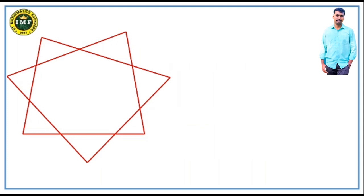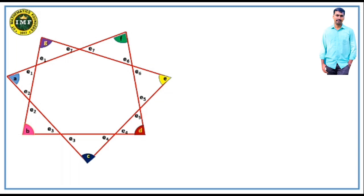Here is the second complex figure. I mark the angles at the vertices as A, B, C, D, E, F, G. I want the sum A + B + C + D + E + F + G. Again, the exterior angles are denoted E1, E2, E3, E4, E5, E6, E7. Since vertical opposite angles are equal, I write the remaining angles accordingly. Since there are 7 triangles, all the triangle interior angles upon adding will equal 7 × 180°.